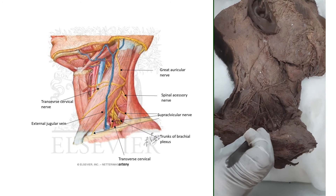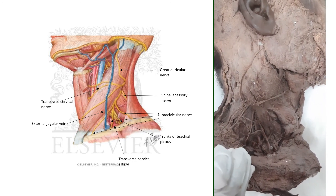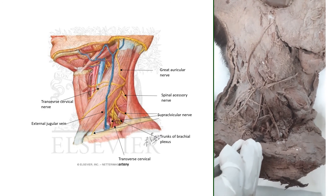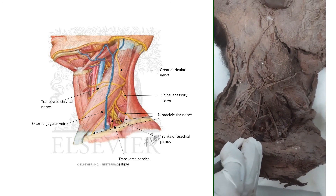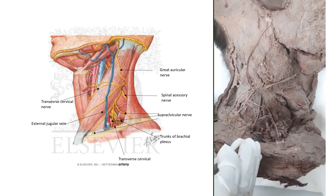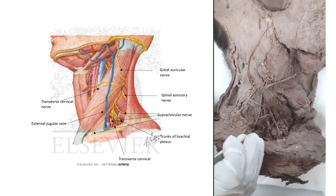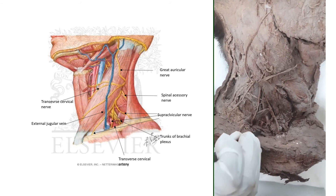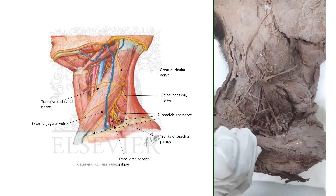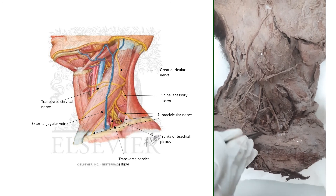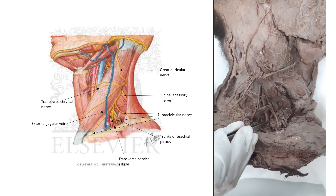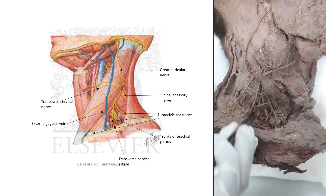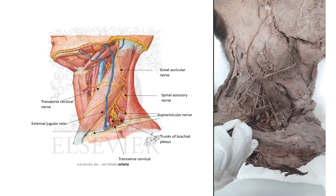Regarding blood vessels, we can see the transverse cervical artery and the transverse cervical vein. The transverse cervical artery comes from the first part of the subclavian artery. We can also see the trunk of the brachial plexus in the posterior triangle.